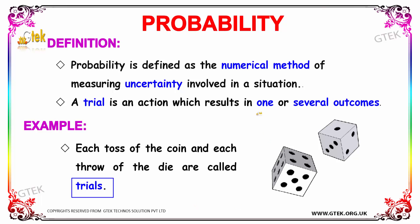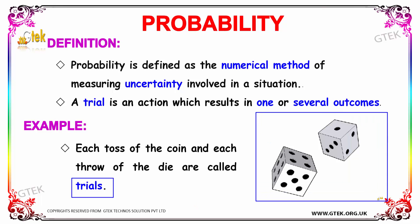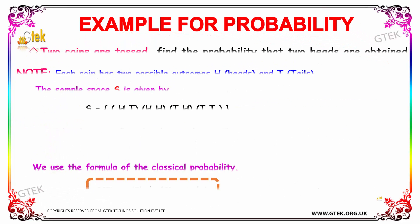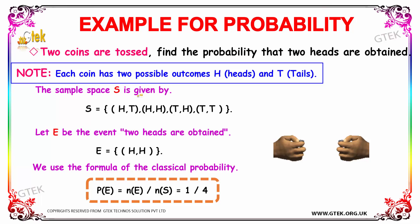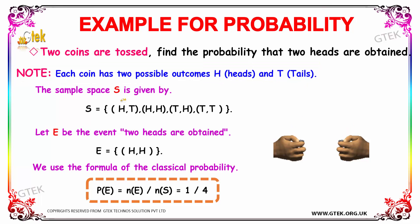Here is an example of probability involving coins. Two coins are tossed and we need to find the probability that two heads are obtained. Before we proceed with the solution, we must note that each coin has two possible outcomes — heads and tails. The sample space is denoted by the letter capital S.